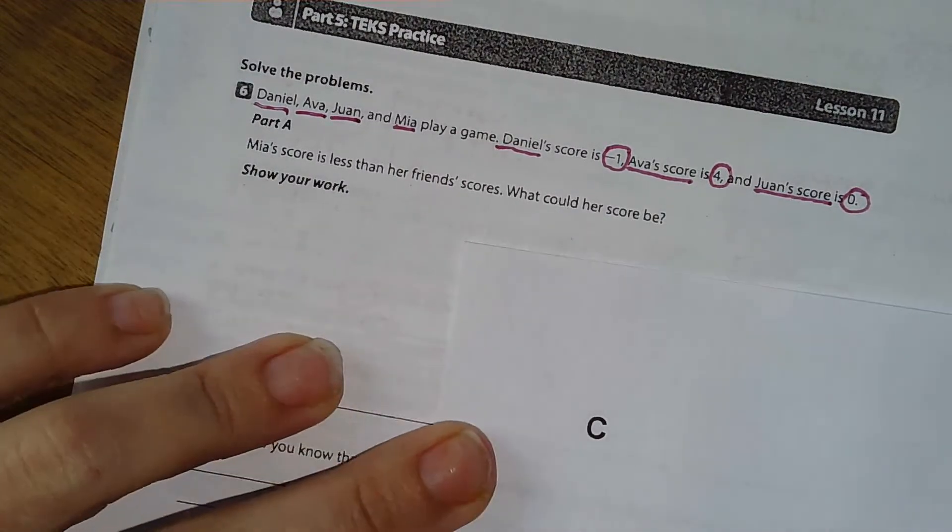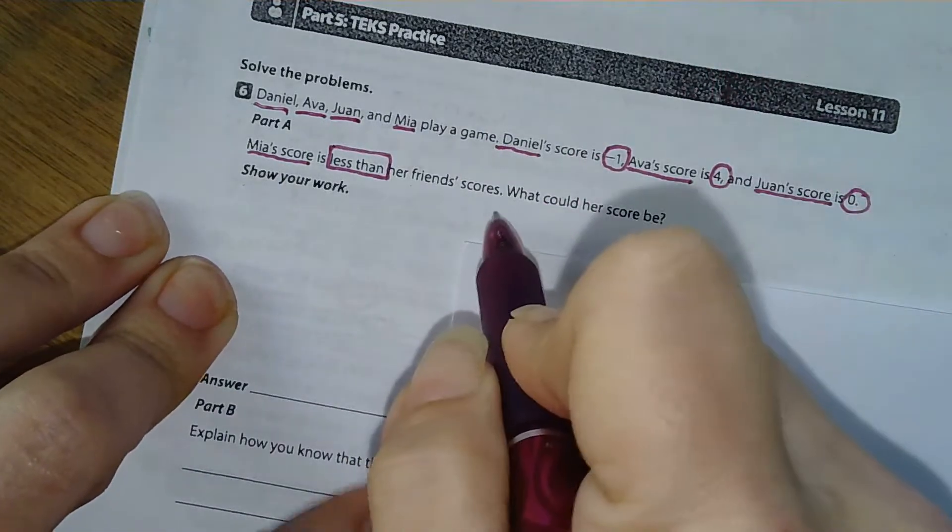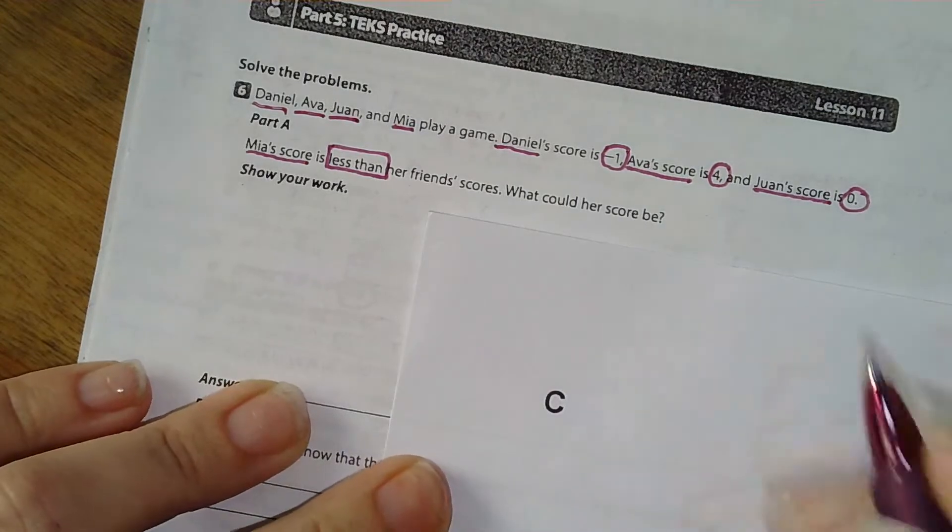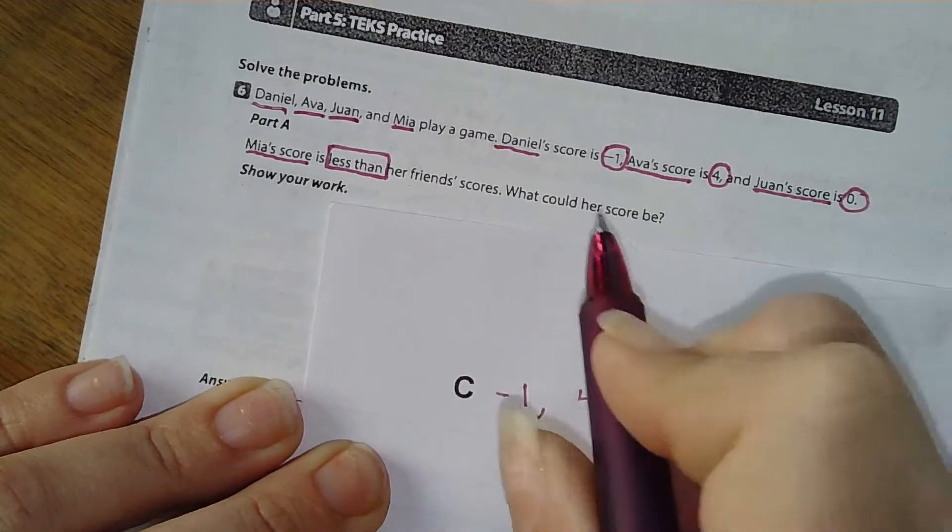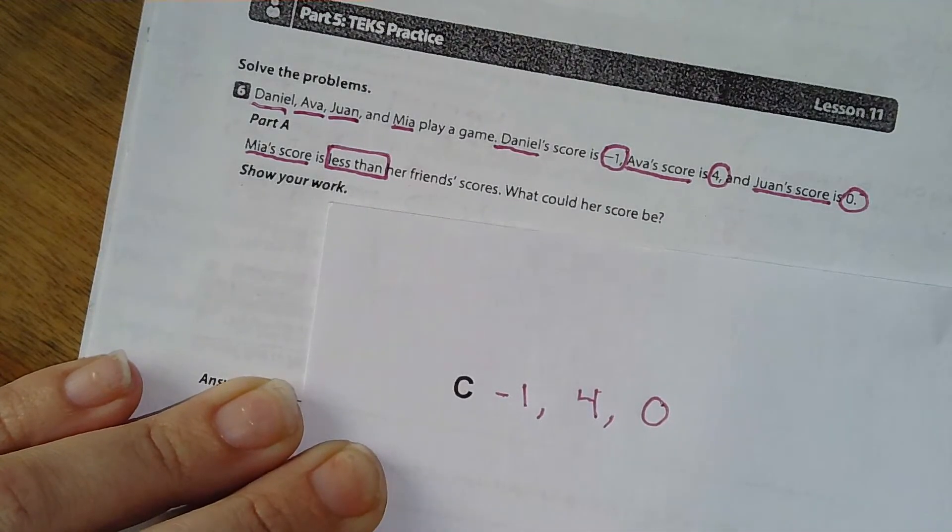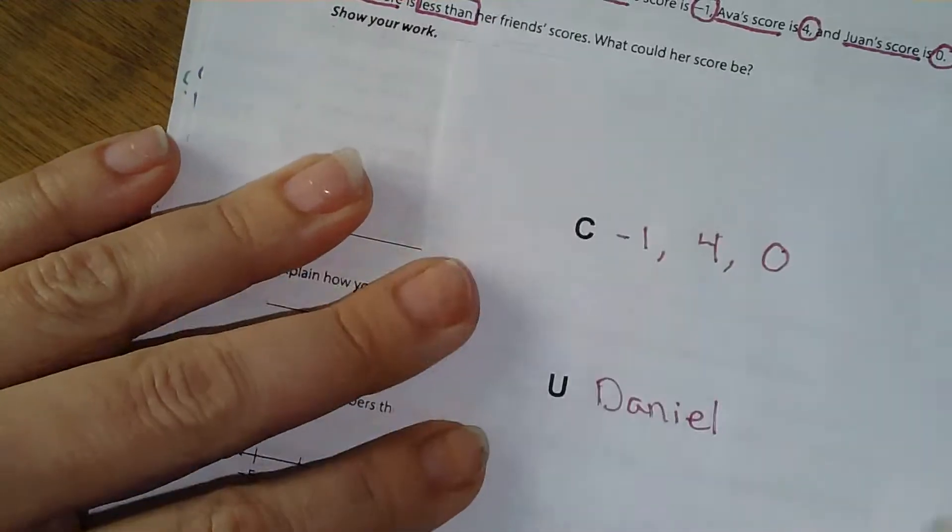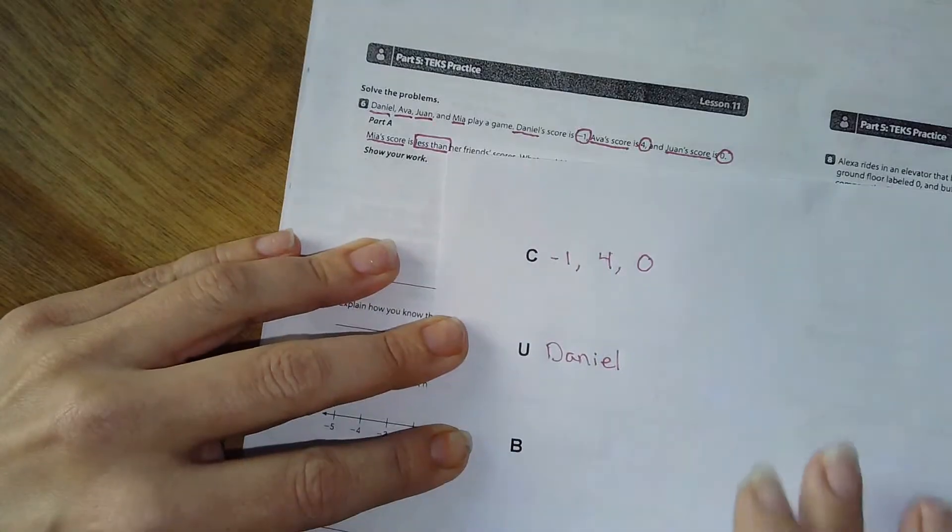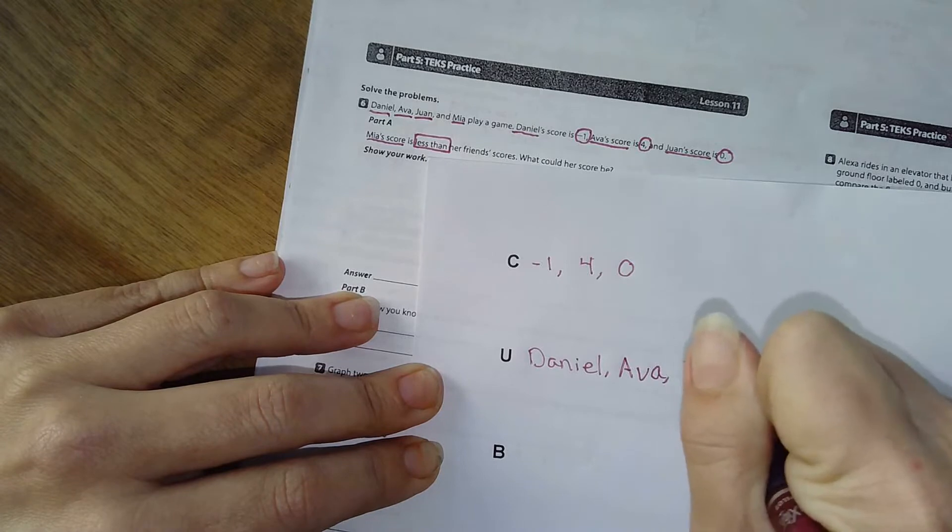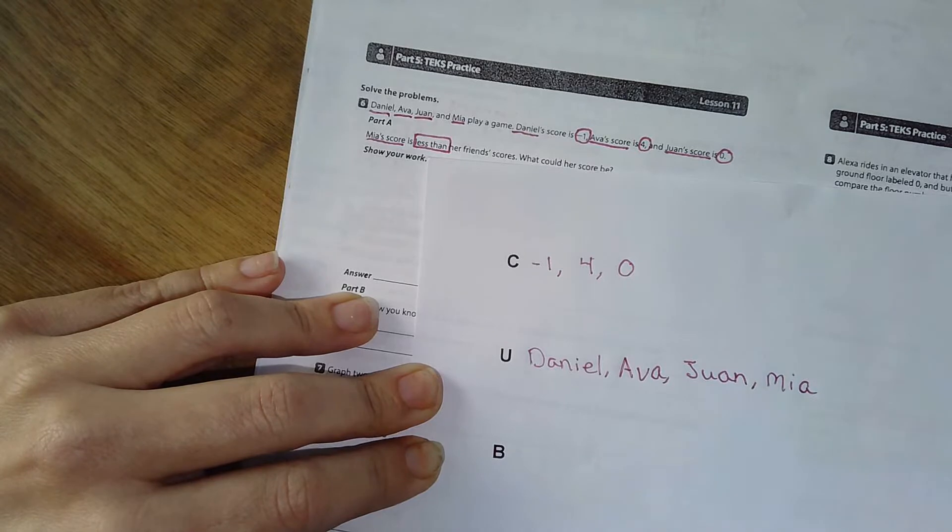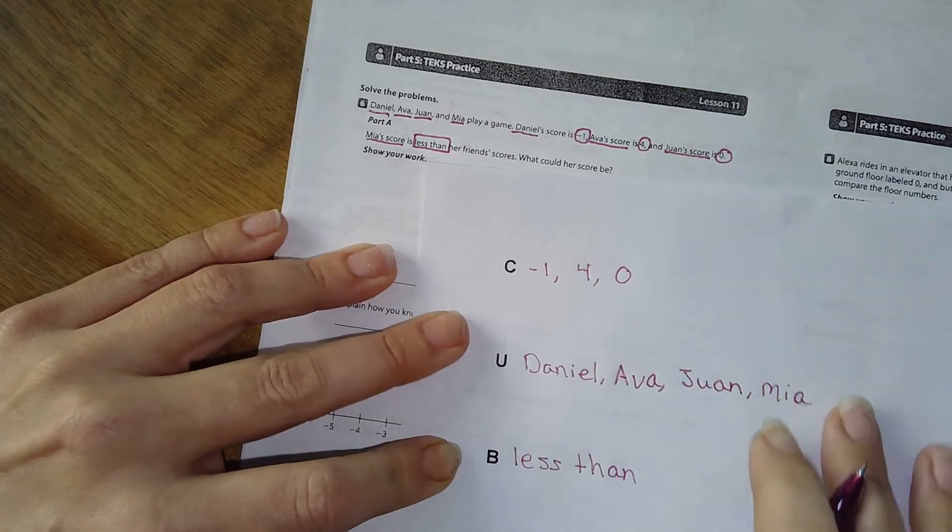Mia's score is less than her friend's score. What could her score be? So Mia's score is less than her friend's scores. What could her score be? Well, okay. So I've got a negative one, a four, and a zero, right? And I underlined Daniel, move my coffee mug there. Let me unzoom this. Daniel, Ava, Juan, and Mia. I boxed less than.